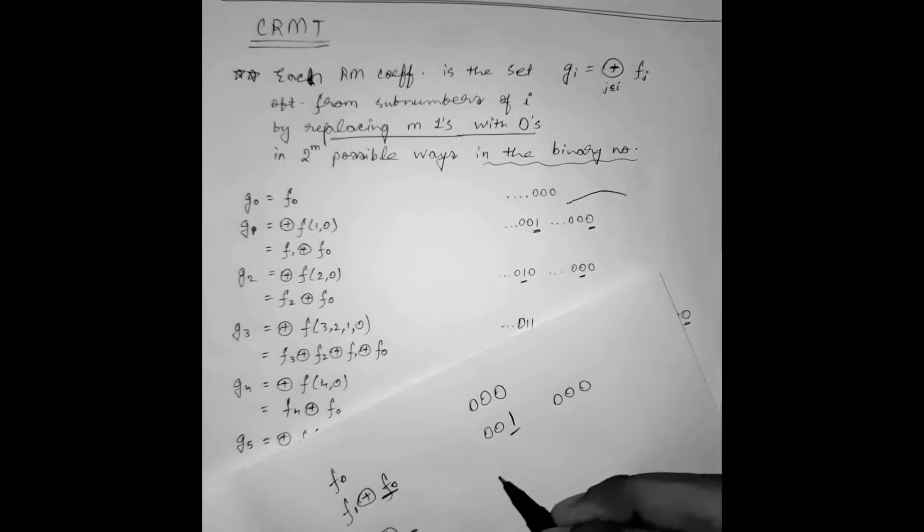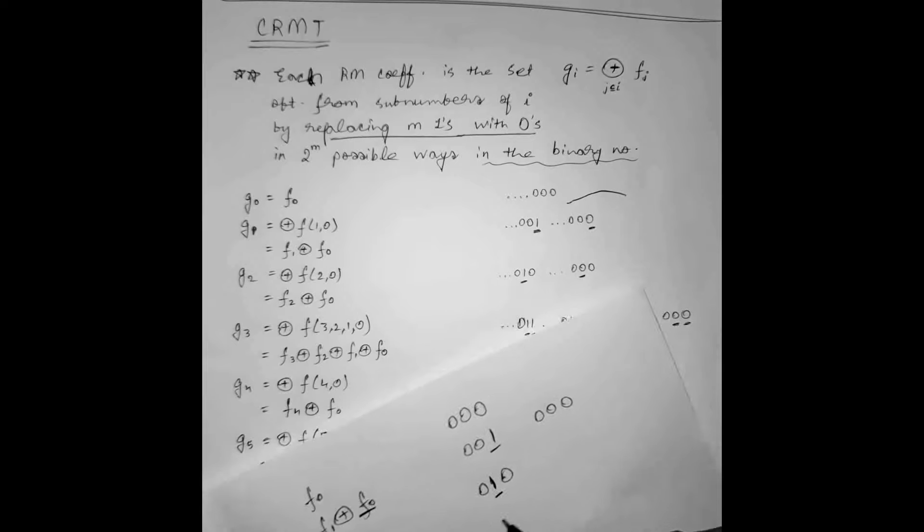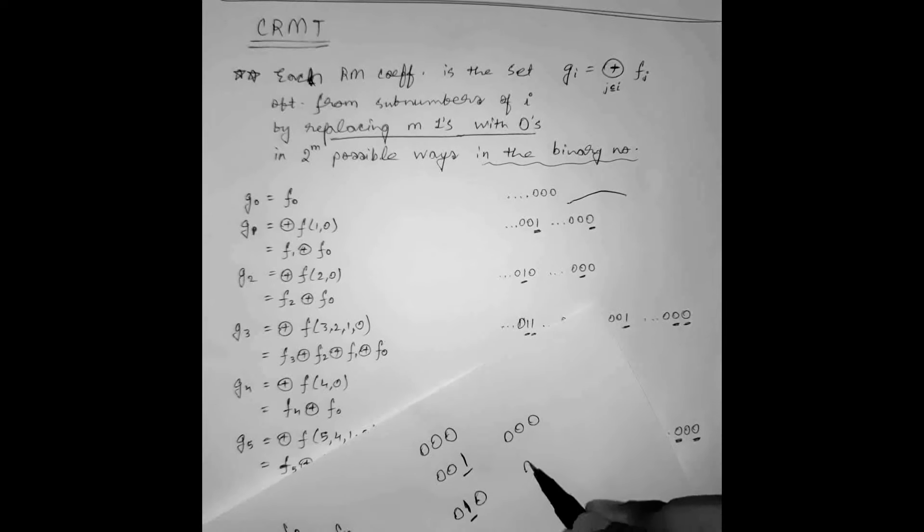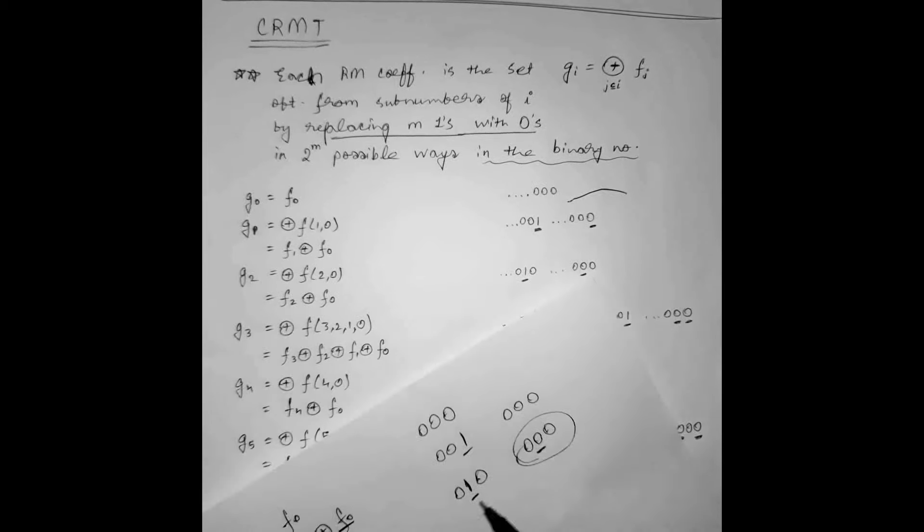For G2, let us see. F2 XOR, let us see which term will come here. 2 can be represented as 0, 1, 0. So now we have 1 here. We can replace it easily. See it is 0, 0, 0. So F0 will come here because it is for 0. It is for 2.